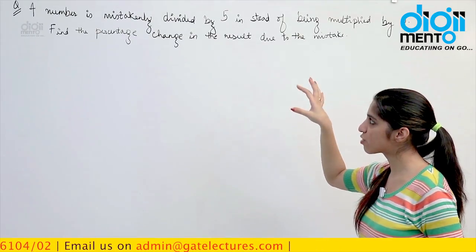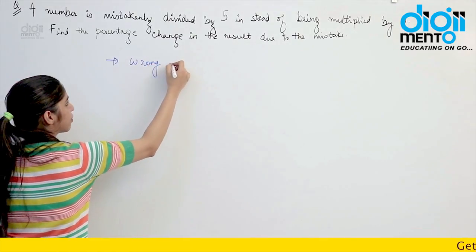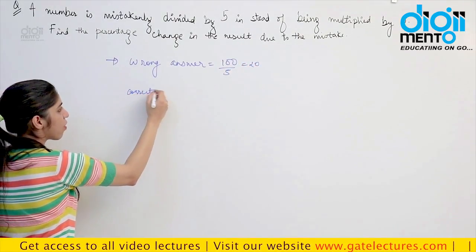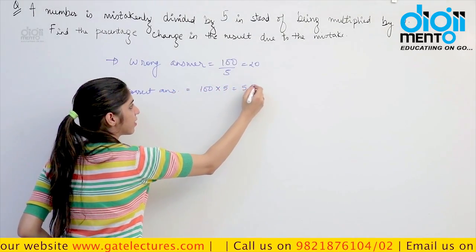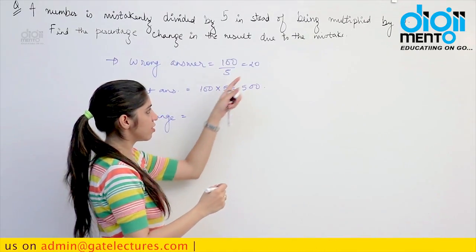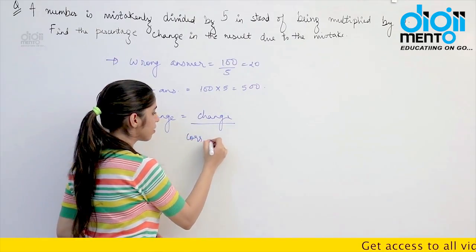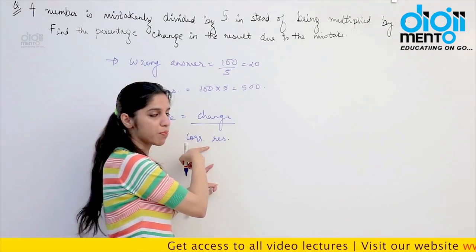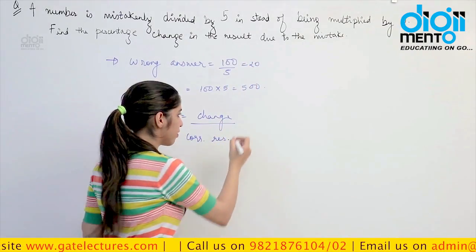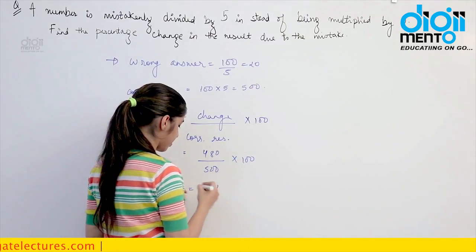Consider the number being talked about as 100. It is divided by 5, so the wrong answer would have been 100 ÷ 5 = 20. Whereas the correct expected answer should have been 100 × 5 = 500. Now, percentage change in result is calculated with reference to the correct result, because it is with reference to the correct result only that you can calculate the mistake. So change = (500 − 20) / 500 × 100 = 480/500 × 100, which gives us 96%.